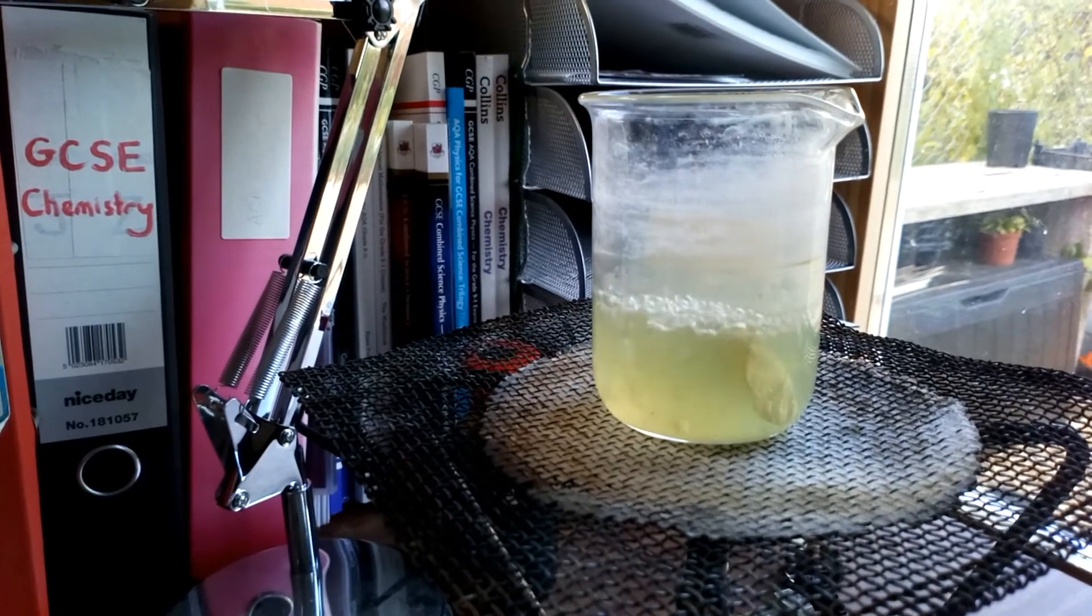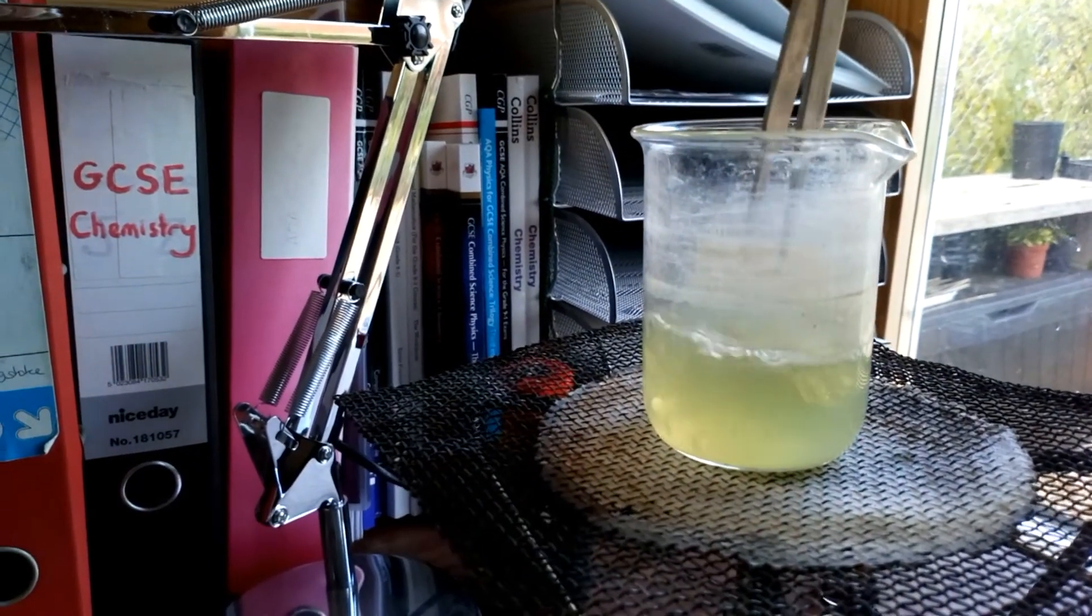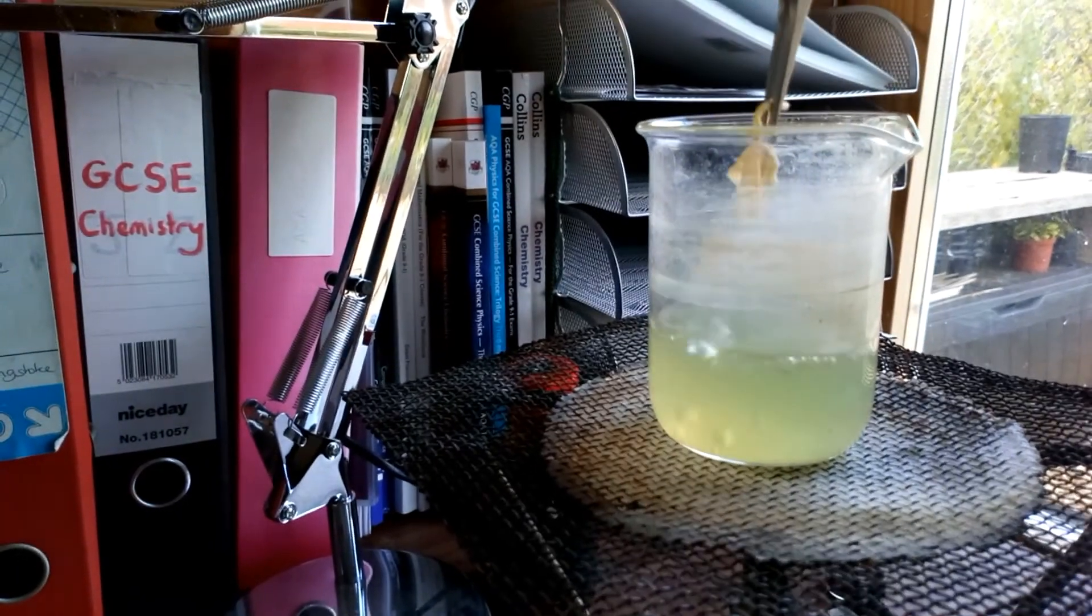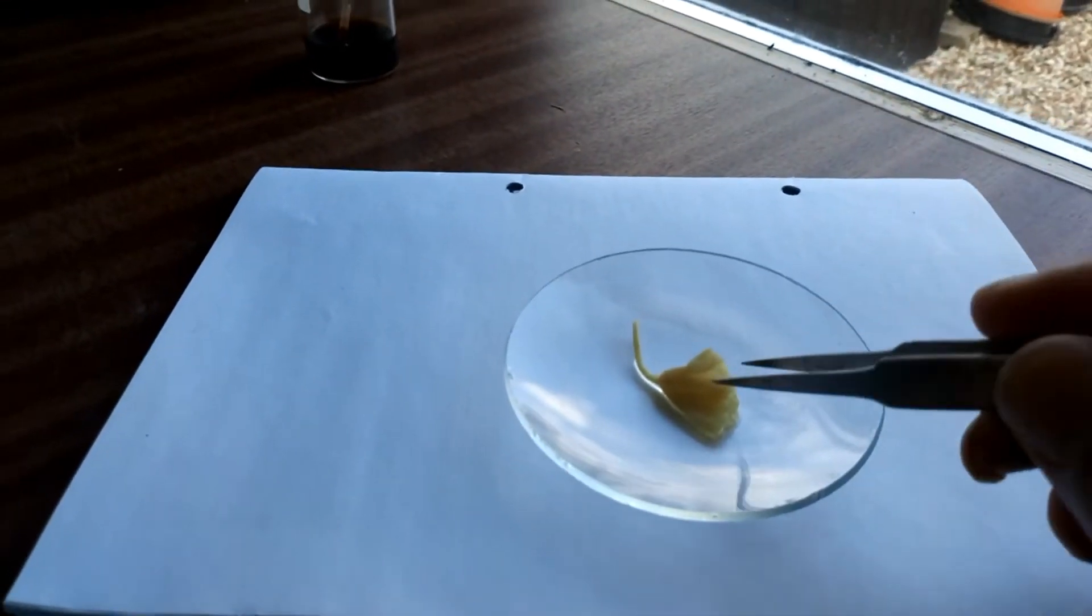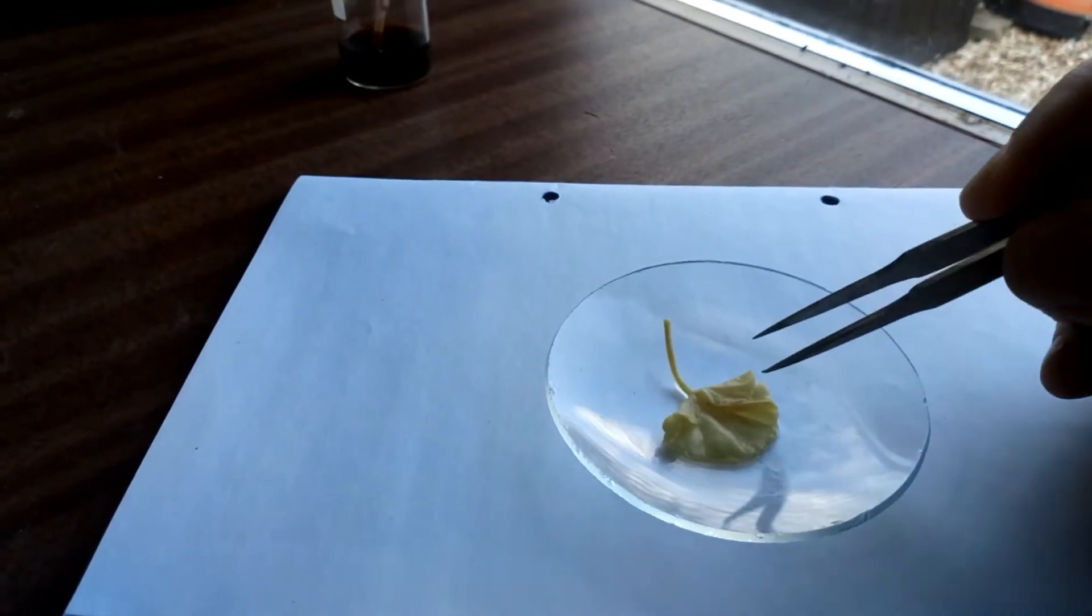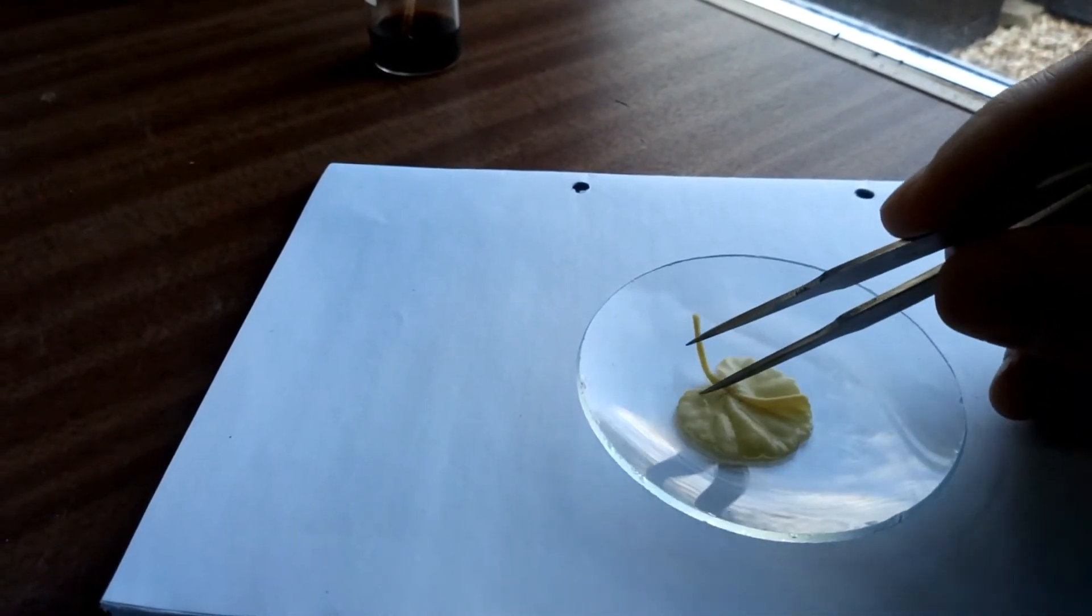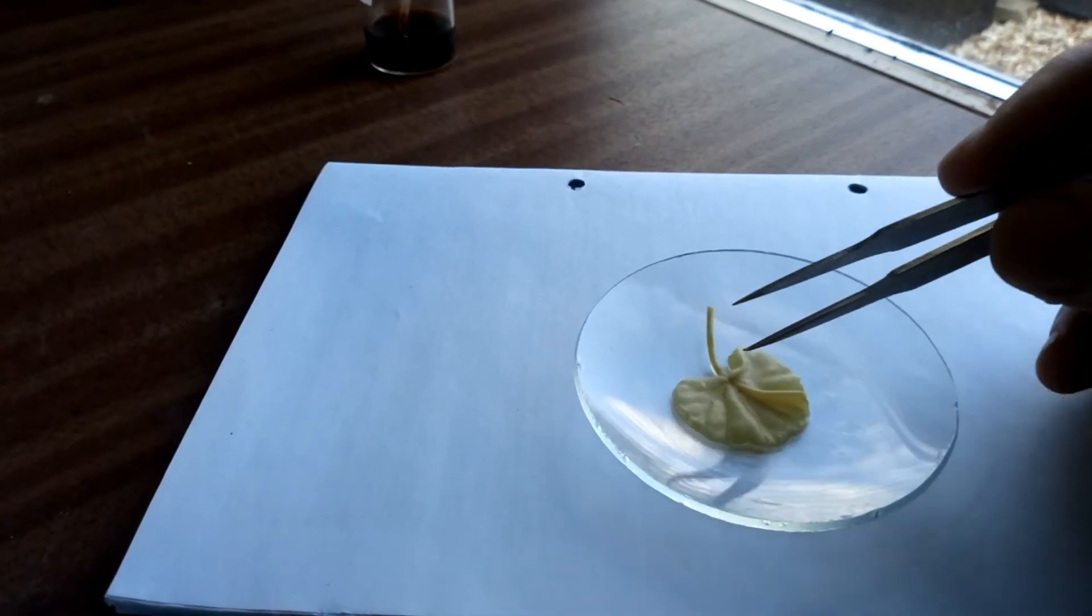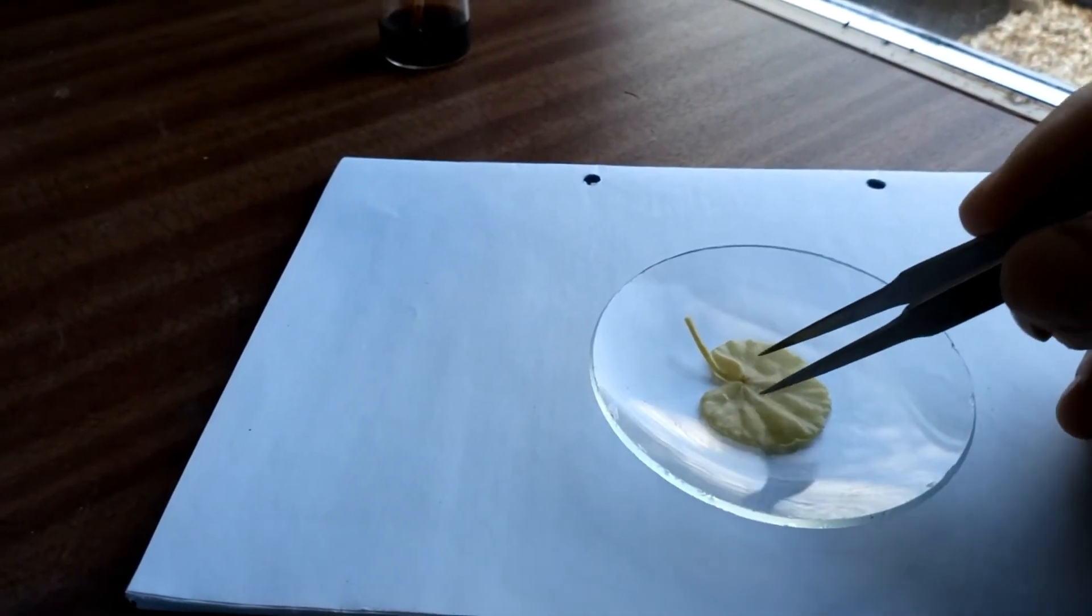And now we'll remove the leaf from there. You can see now it's gone quite floppy. And then we're putting that down onto the dish there. And then we should be able to spread it out onto the surface like that.